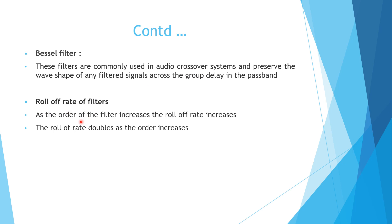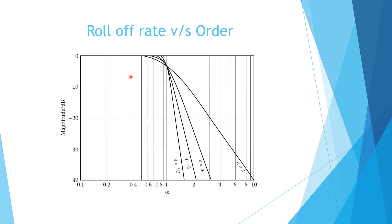The roll-off rate of filters increases as the order increases — the roll-off rate doubles when the order increases by one (e.g., from first to second order). A graph of roll-off rate versus order shows that at lower orders the roll-off rate is small, while at tenth order it is very sharp, closely approximating the ideal filter. For a steeper roll-off, choose a higher order filter, or cascade smaller-order filters to achieve a higher effective order.